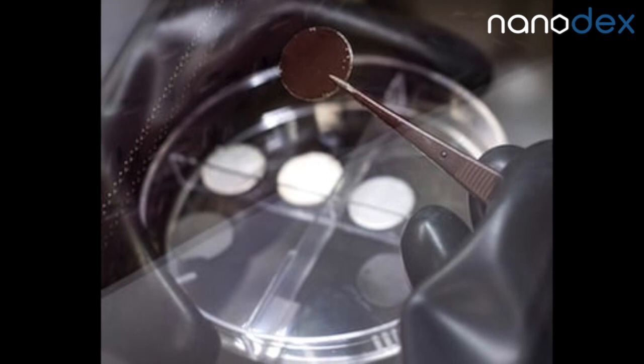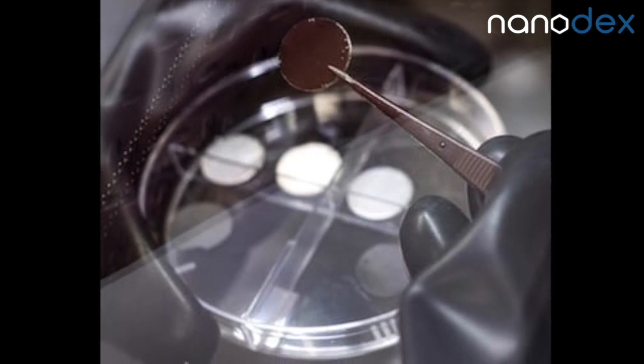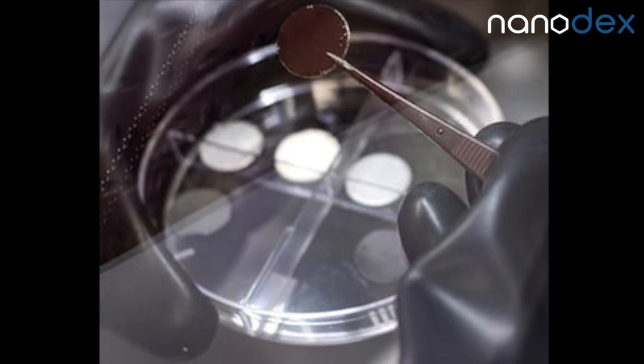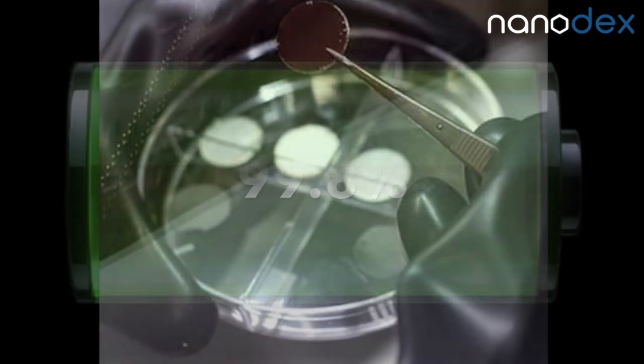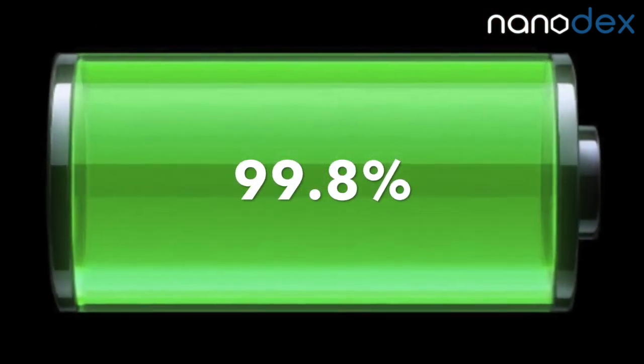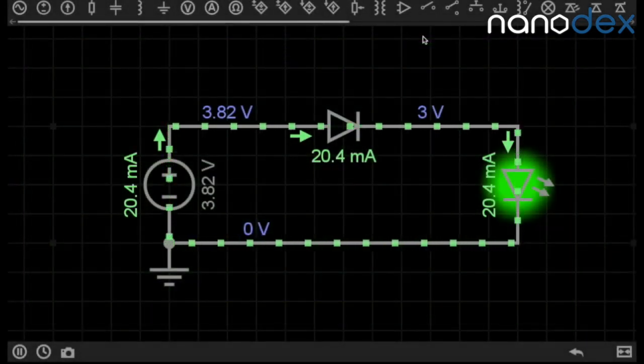The researchers found out that the carbon nanotube film effectively stopped the growth of dendrites in the experimental battery. They further reported that the battery retained 99.8% of its coulombic efficiency, which is a measure of how well electrons flow.